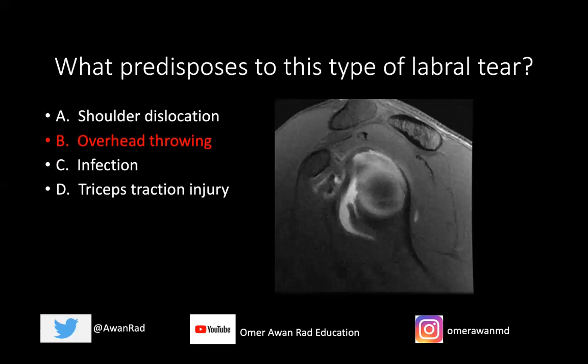What predisposes to this type of labral tear is overhead throwing. This tear was first described in baseball pitchers who performed a lot of overhead throwing. A shoulder dislocation is more commonly seen with a Bankart tear along the anterior inferior labrum. These types of tears are related to biceps traction injury, not triceps traction injury — typically with forced extension when the forearm is in flexion, which is the mechanism of injury for most SLAP tears.